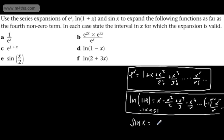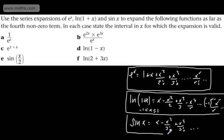Sine x is equal to x minus x cubed over 3 factorial plus x to the fifth over 5 factorial and so on, and that is valid for all x as well. So the first two expansions are valid for all x, while the natural log of 1 plus x is strictly greater than minus 1 and less than or equal to positive 1.